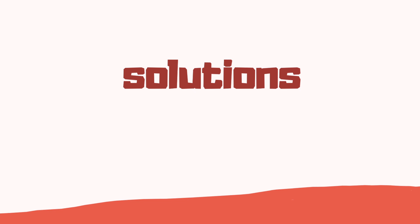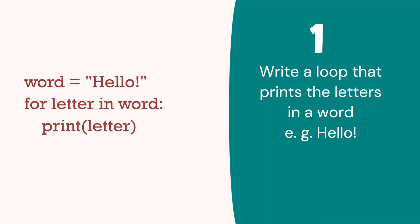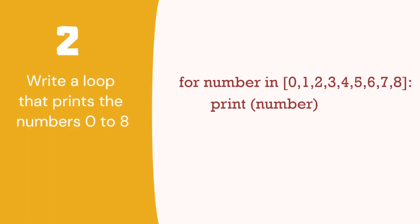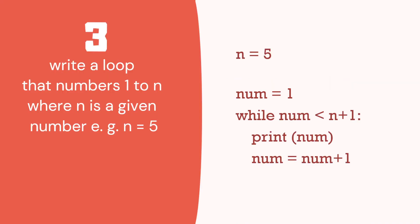Let's have a look at these solutions. Number 1: write a loop that prints the letters in a word. So we've got the word, the string. Print each letter in that in a simple for loop. Number 2: again, we've got a simple for loop. We've got numbers from 0 to 9 and we can print them.